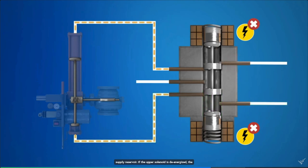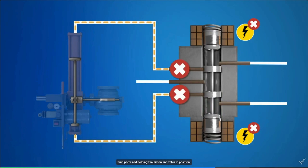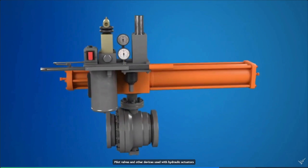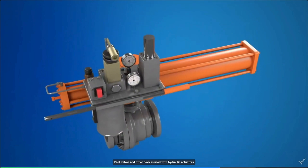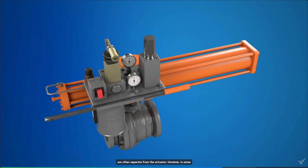If the upper solenoid is de-energized, the springs return the spool to the neutral position, blocking the fluid ports and holding the piston and valve in position. Pilot valves and other devices used with hydraulic actuators are often separate from the actuator. However, in some actuators, all the components may be part of a single unit.